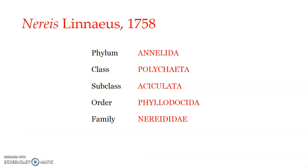Welcome everyone. We have been discussing Phylum Annelida and have seen its general features and classification. Phylum Annelida is divided into two classes: Class Polychaeta and Class Oligochaeta. As a type species, we will be learning more about Nereis to study the morphological and anatomical characters of Phylum Annelida members. Nereis is a typical polychaete annelid. Its systematic position is: Phylum Annelida, Class Polychaeta, Subclass Errantia or Phyllodosida, Family Nereidae, Genus Nereis.